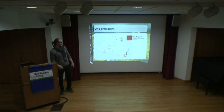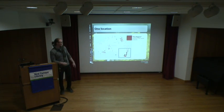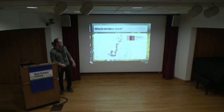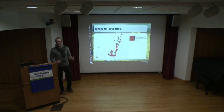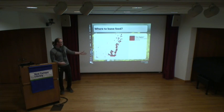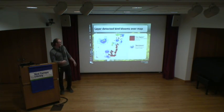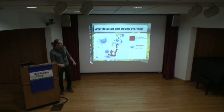Rather than looking at the whole evolving fire, we'll focus on one time point. The red areas show fire, and we'll focus on the southeastern side — one of the two most impacted areas. We can take the bird radar data and superimpose it over this map to see the bird blooms layered over the fire map, helping identify where to drop food for surviving animals.